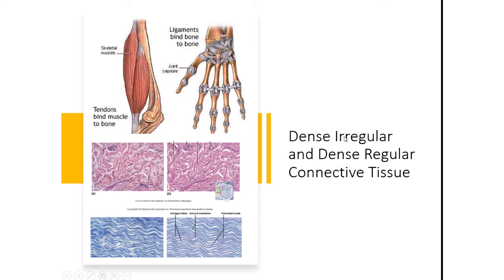Dense connective tissue comes in two forms. Dense irregular connective tissue has fibers scattered in seemingly random directions and is found in the deeper layers of the skin, serving as padding. Dense regular connective tissue has highly organized parallel fibers and is found in ligaments and tendons. A tendon connects a muscle to bone, while a ligament connects two bones together — such as the ligaments in the wrist and finger joints.